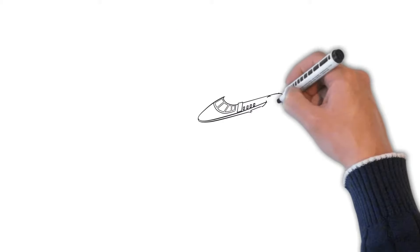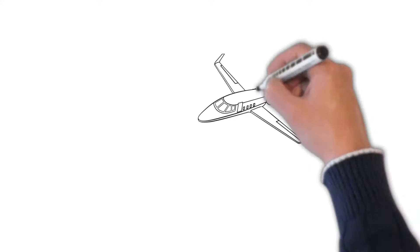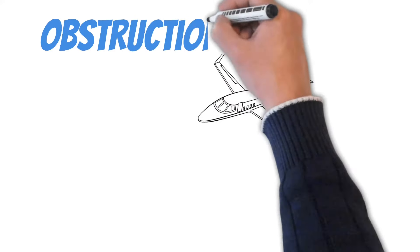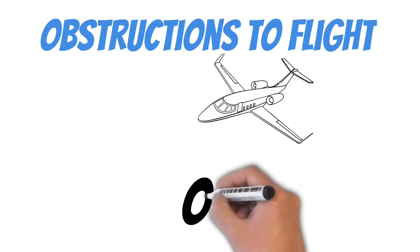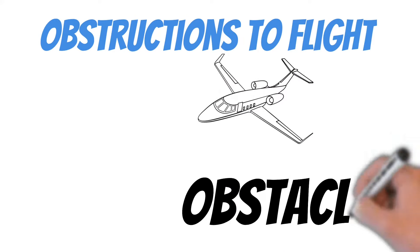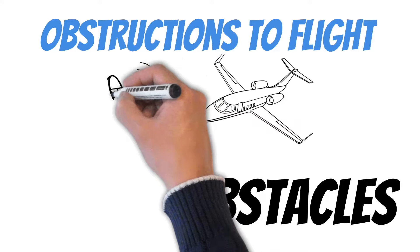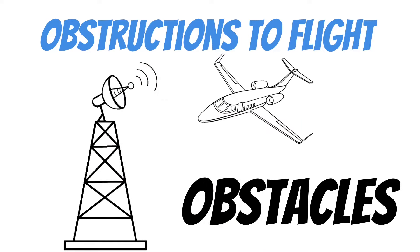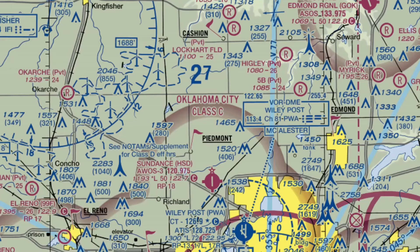As a pilot, some of the most dangerous situations that we get into are because of obstructions to flight. Some of the most common obstructions these days are manmade obstacles. To help us avoid these, when these obstacles are taller than 200 feet, they're charted on our VFR sectional.